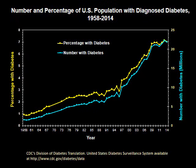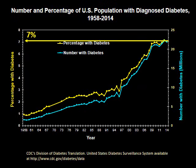This graph has two important pieces of information. The yellow line shows the percentage of Americans who've been diagnosed with diabetes — following it to 2014, it's about seven percent of our population. The blue line shows the number of millions of people who are diabetics, and in 2014 that's about 22 million people. Both lines show that diabetes in the United States is increasing at a dramatic rate, which is very troubling.